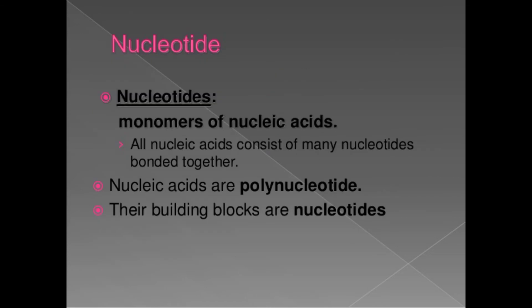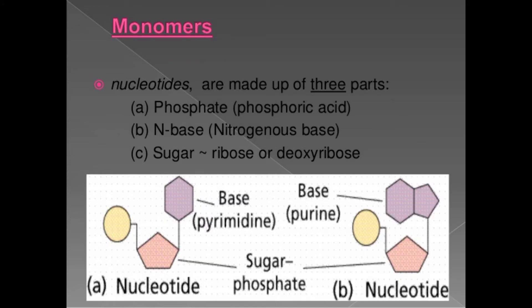Nucleotides are the monomers of nucleic acids. All nucleic acids consist of many nucleotides bonded together — nucleic acids are polynucleotides whose building blocks are nucleotides. Nucleotides are made up of three parts: first, phosphate (phosphoric acid); second, the nitrogenous base; and third, the sugar — ribose or deoxyribose, which are examples of pentose sugars.